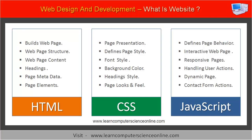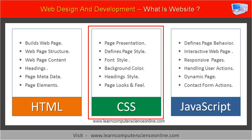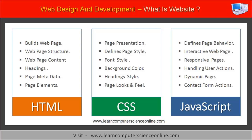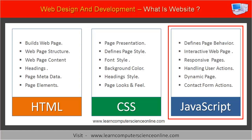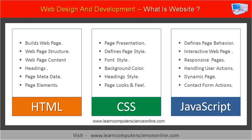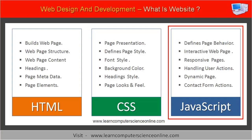CSS stands for Cascading Style Sheets. The CSS renders the style to the web page, such as text formatting, color scheme for various page elements, and other page formatting details. JavaScript is a web programming language. The JavaScript code is executed in the web browser and defines the page behavior.